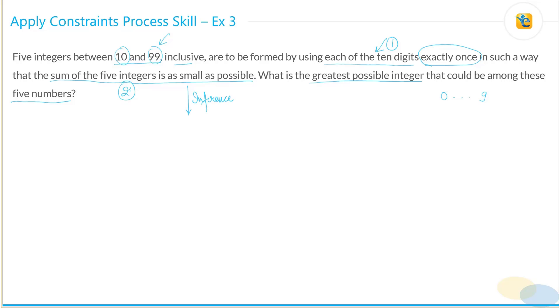What you can infer is that your numbers should be as small as possible. If the sum is to be as small as possible, then the numbers need to be as small as possible. Now you can use each of the digits—let's come back to our digits part over here.